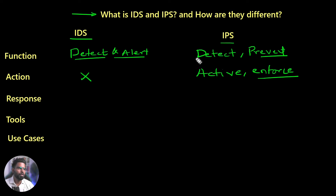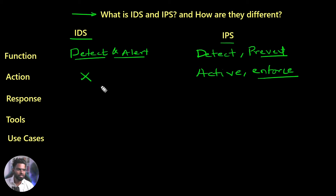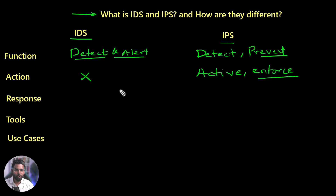The problem is when you put IPS in the real world, it might disrupt the business as well. It's important that initially large organizations utilize IDS very well because they can't really play with the business. If IPS goes wrong and gets a false positive, creates or enforces any policy, it might disrupt the business.